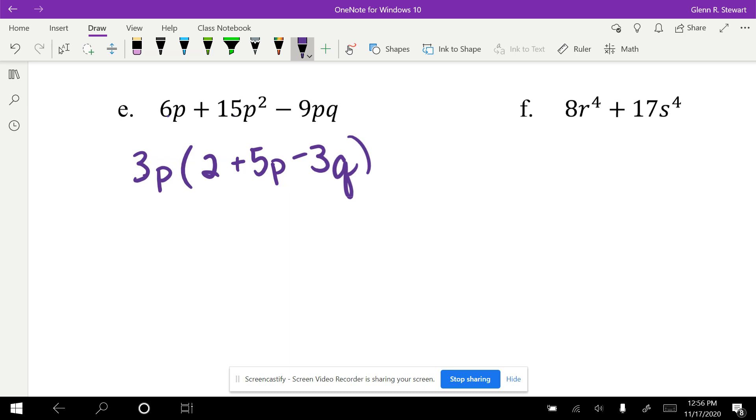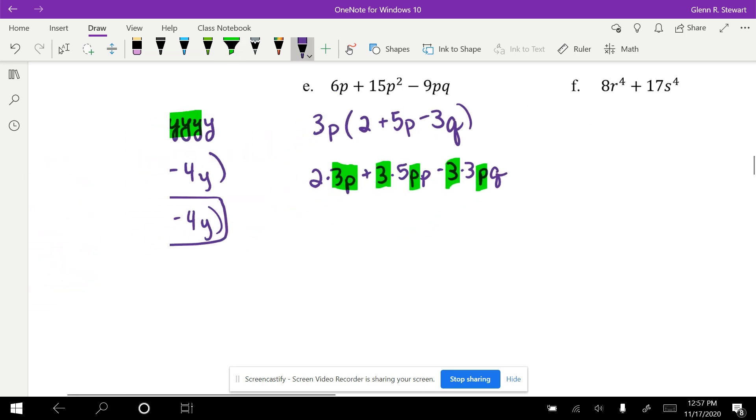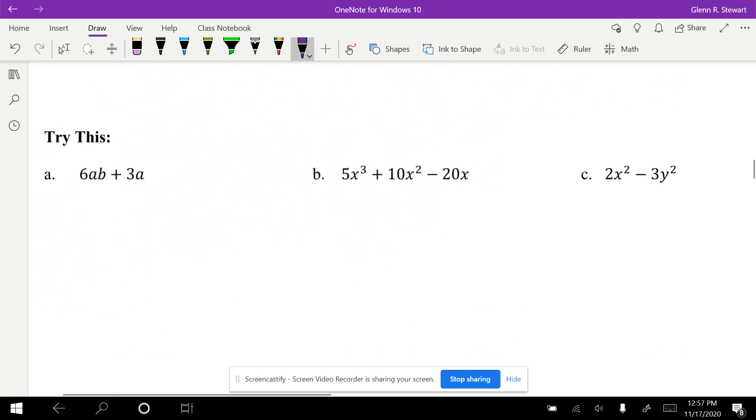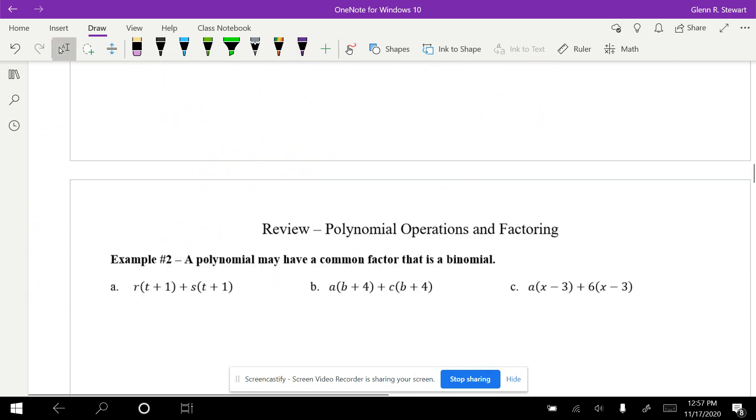Same exact thing as if we tore it all apart. Same exact thing as if we made this 2×3p + 3×5pp - 3×3pq. We took out a 3p, a 3p, a 3p, and look what's left. So there's how we factor using greatest common factor. We're going to skip the try this. We're going to talk about a polynomial that has a common factor that is a binomial.